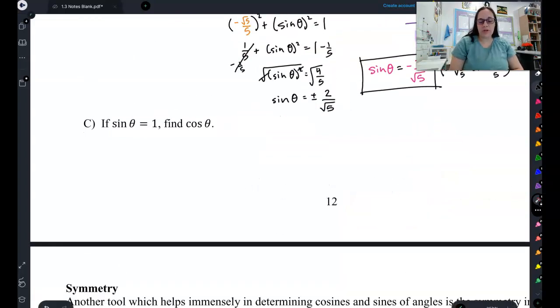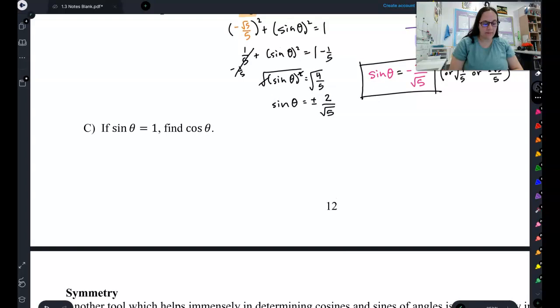Last one. Try this one as our last problem for using the Pythagorean identity. Once again, set it all up knowing that our sine value is 1 and you are solving for the cosine value. Then, come back and check your work.